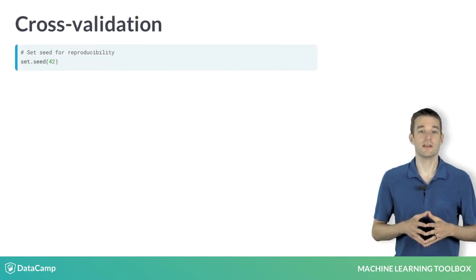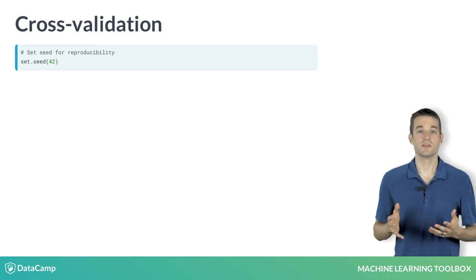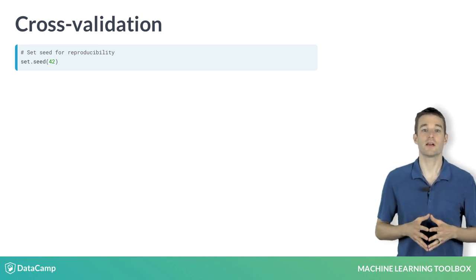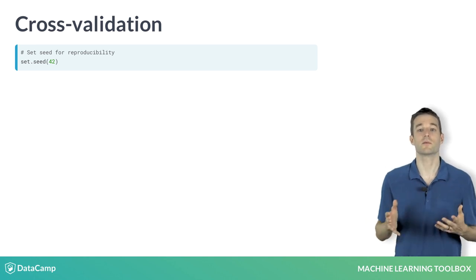Let's fit a cross-validated model to the mtcars data set. First, we set the random seed, since cross-validation randomly assigns rows to each fold and we want to be able to reproduce our model exactly.